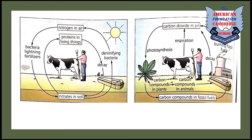Carbon cycle: the carbon cycle is a cycle by which carbon is exchanged among the biosphere and the atmosphere of the earth. Carbon is the main component of biological compounds as well as a major component of many minerals, such as limestones.